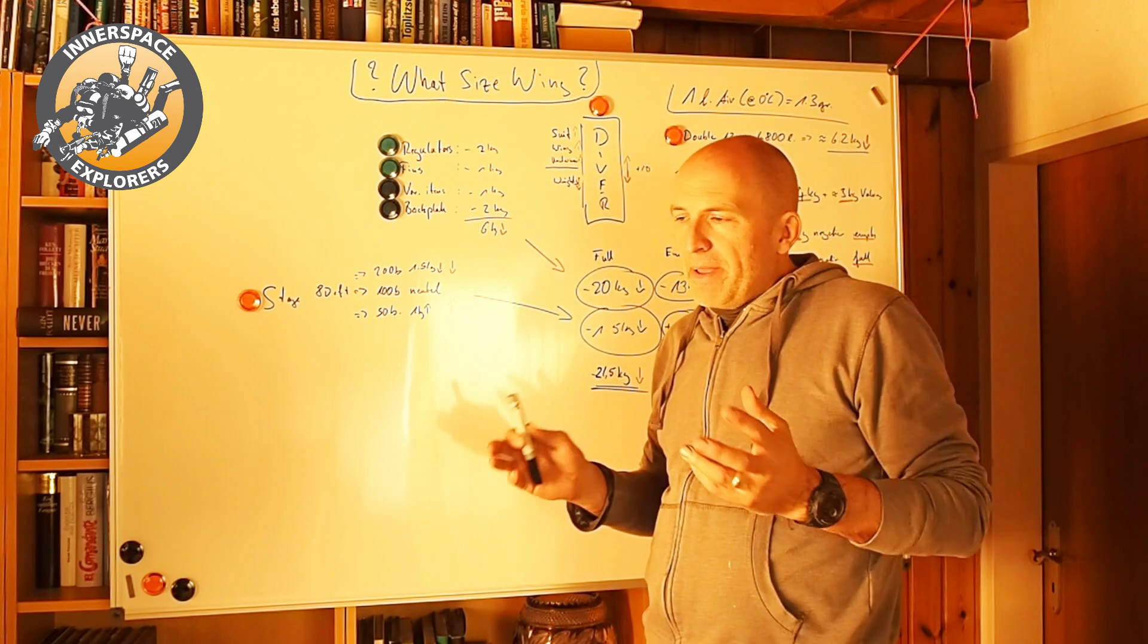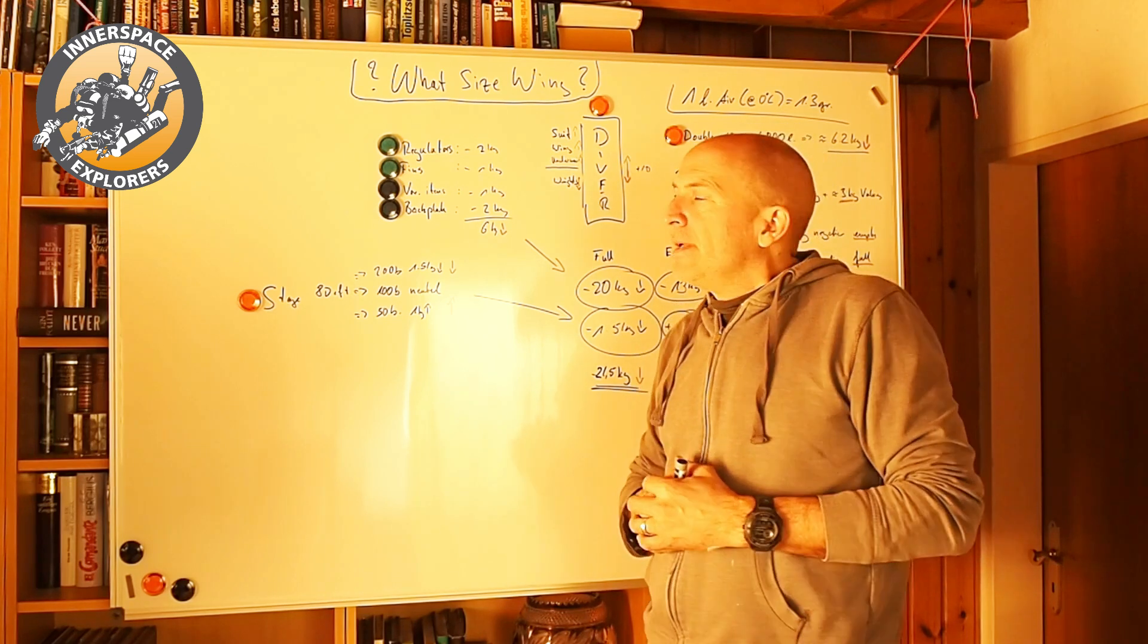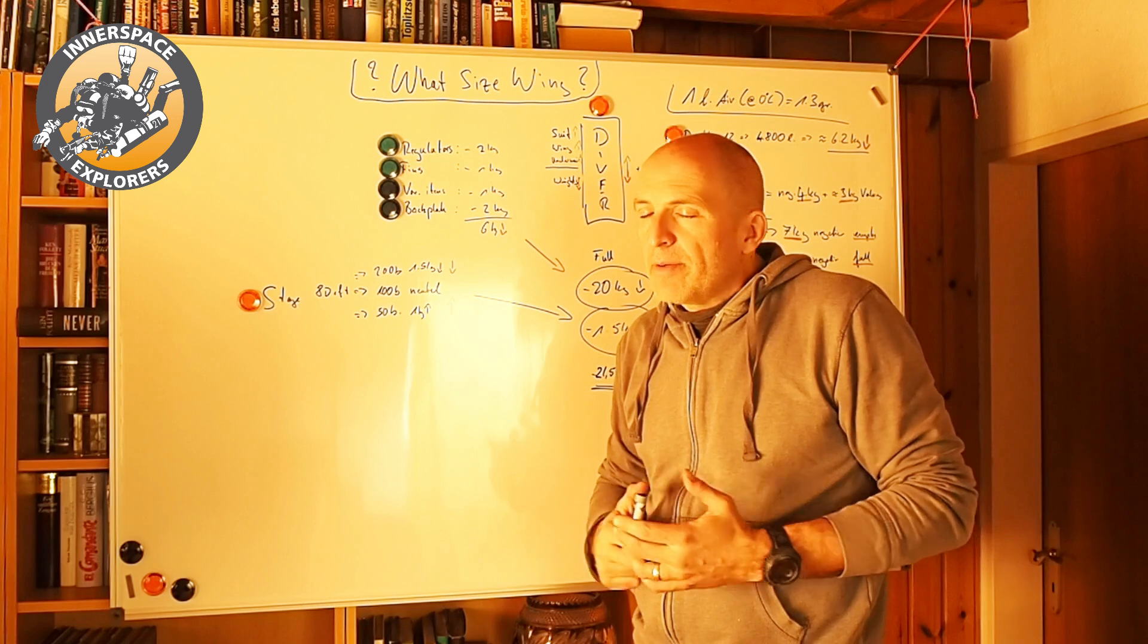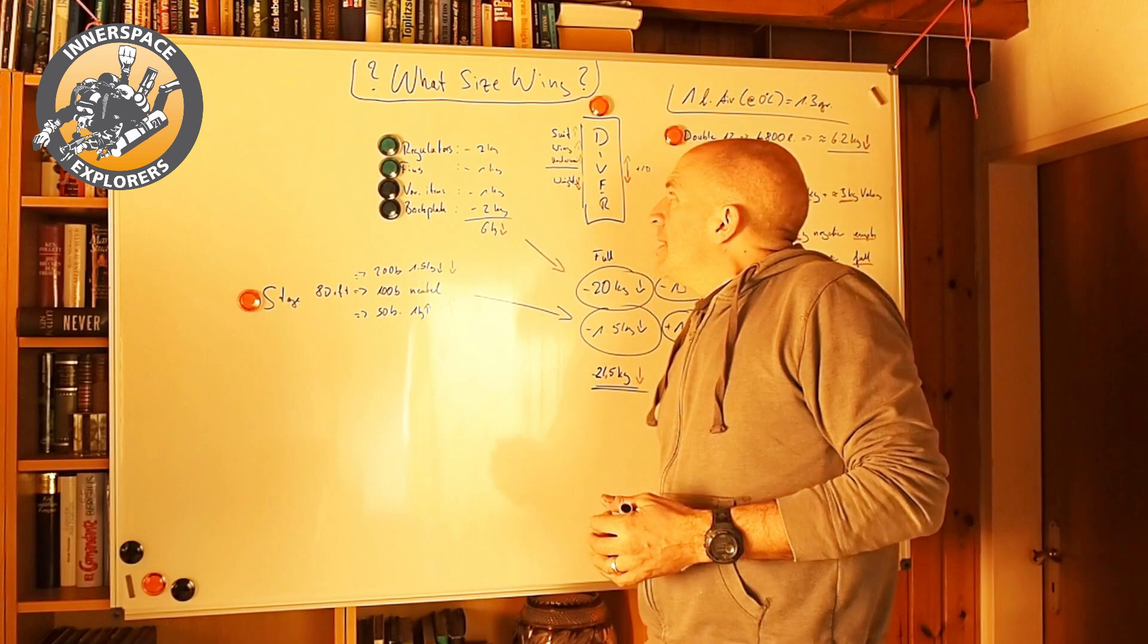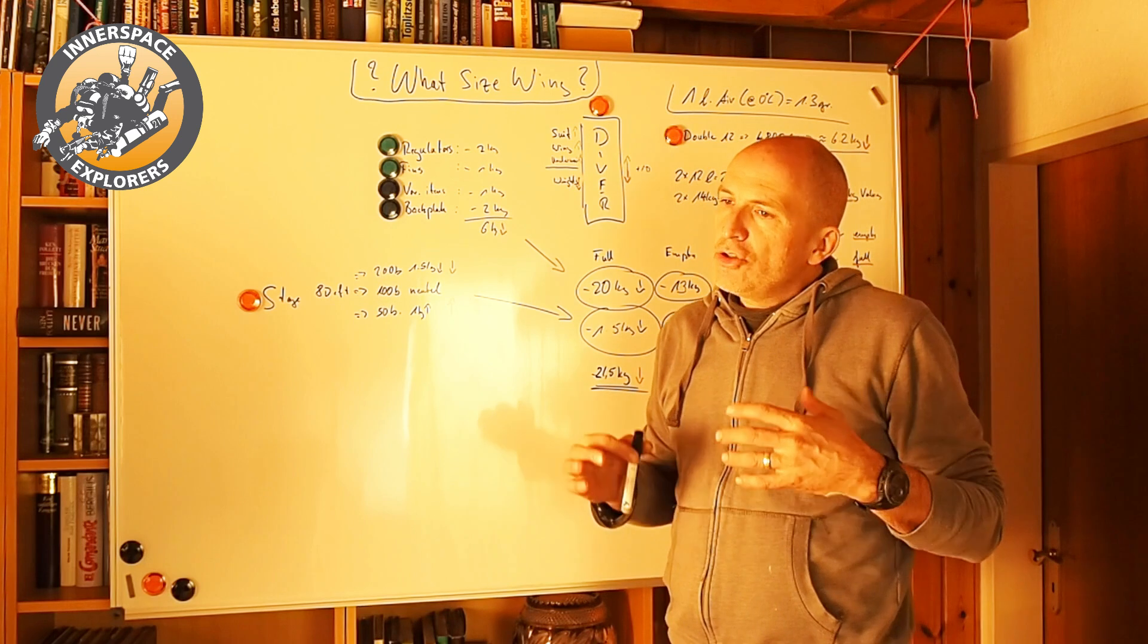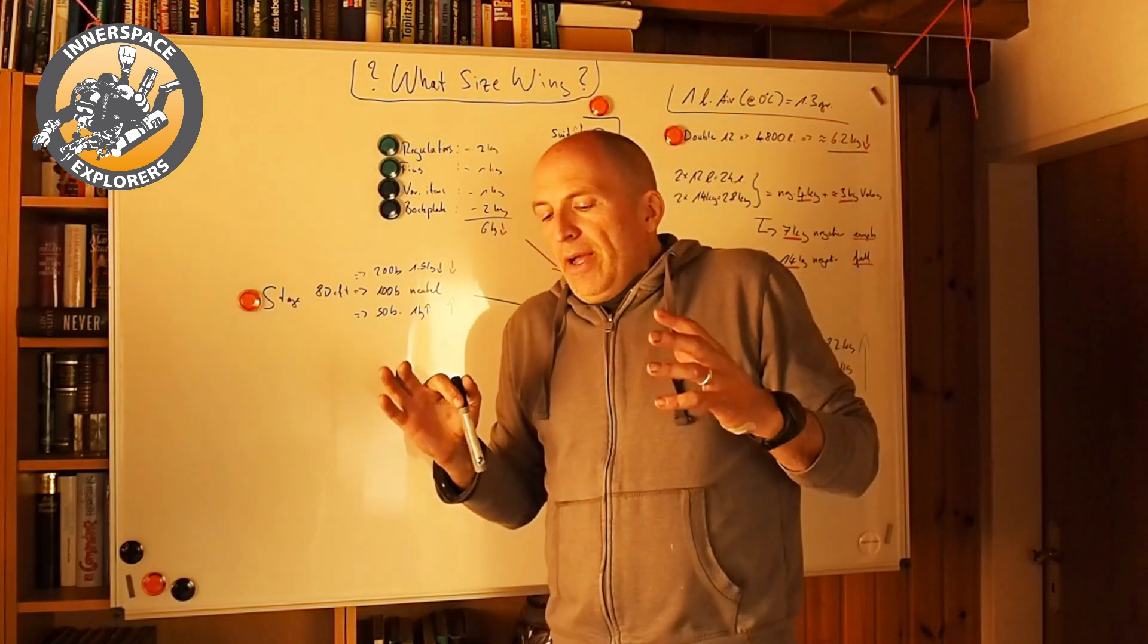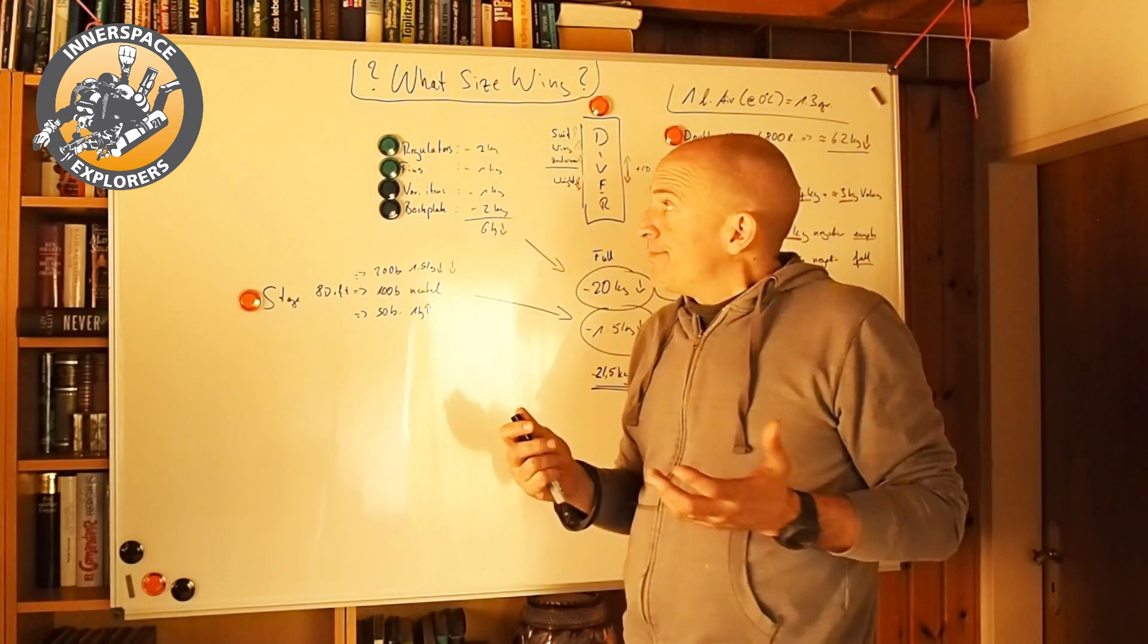Then obviously, if we have a wing, there's always some remaining gas trap that normally adds a little bit of lift as well. And depending on what type of undergarment we use, if we dive a tri-laminate dry suit, then obviously that also changes our buoyancy characteristics. So on the other hand, we have the weights that we add, and that's normally the amount of weight that we need to compensate for the lift created by the positive buoyant equipment that we use.